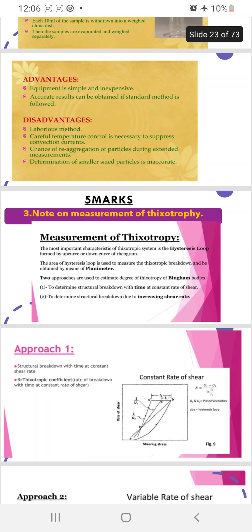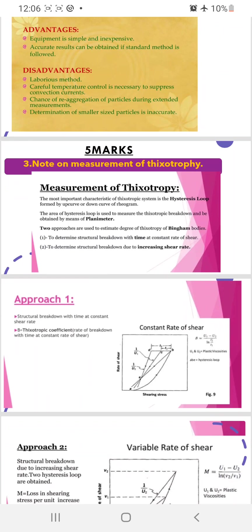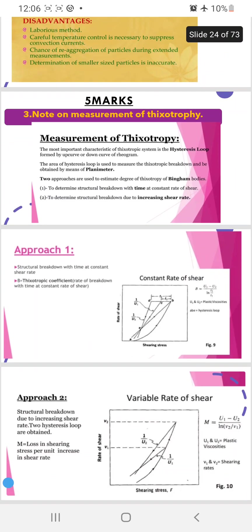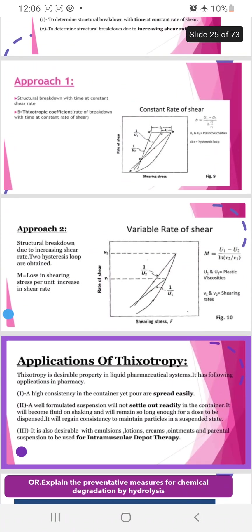Five marks: write a note on thixotropy. Here measurement of thixotropy means mainly two basic measurements are there - approach one and approach two. Approach one and approach two with the graph you have to explain. Applications are also very important.